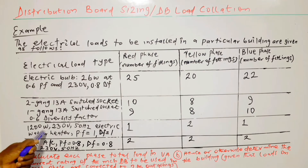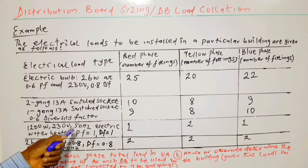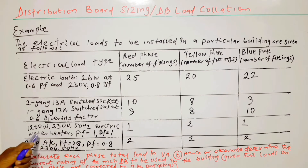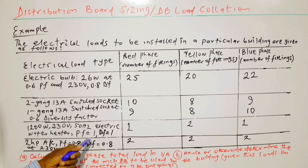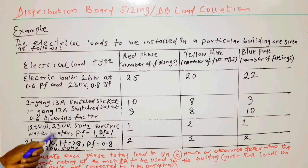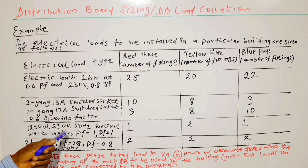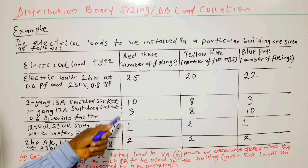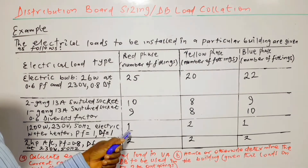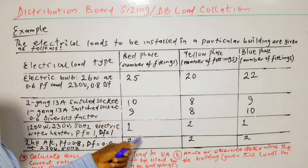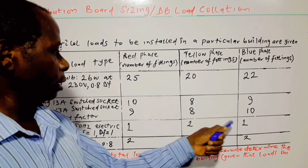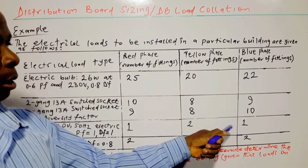Next is a 1,200-watt, 230-volt, 50-hertz electric water heater. The power factor is equal to 1 and the diversity factor is also equal to 1. It's a heating load — that's why the power factor is 1. Any heating load has a unity power factor. We have 1 water heater on the red phase, 2 on yellow phase, and 1 on blue phase.